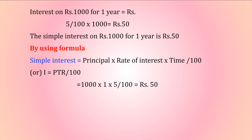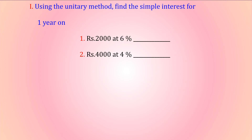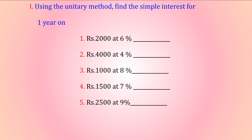Activity: Using the unitary method, find the simple interest for one year on: ₹2,000 at 6%, ₹4,000 at 4%, ₹1,000 at 8%, ₹1,500 at 7%, and ₹2,500 at 9%.